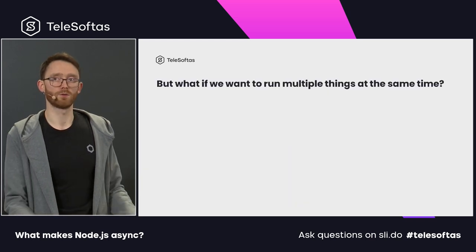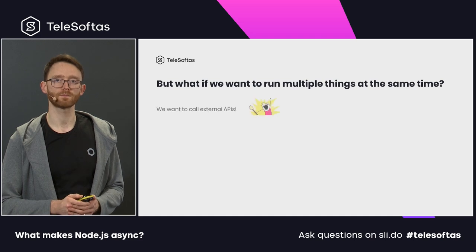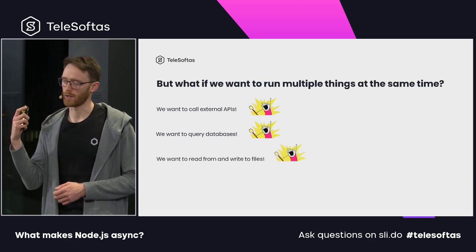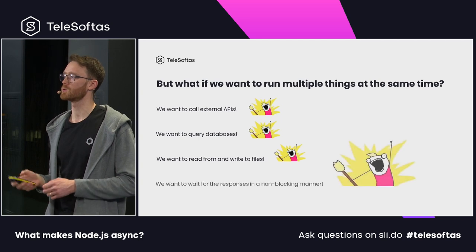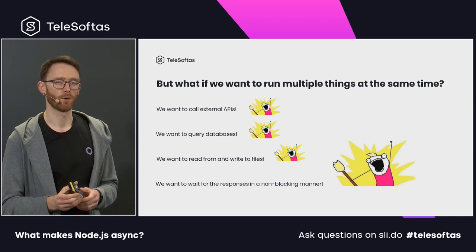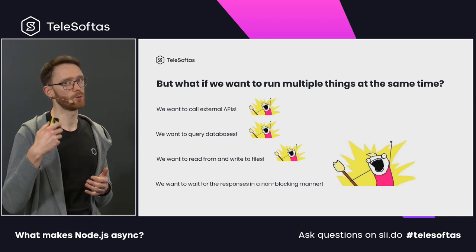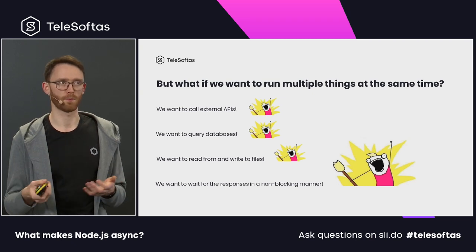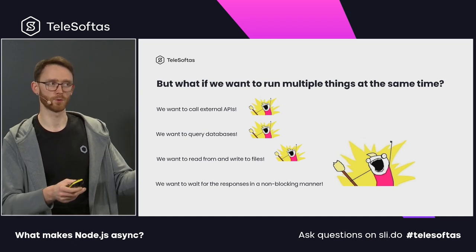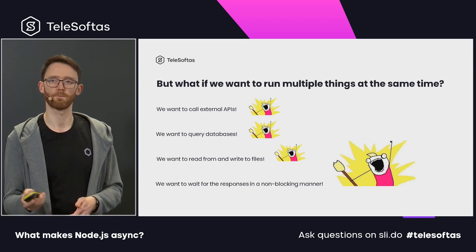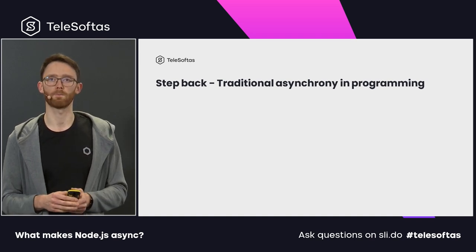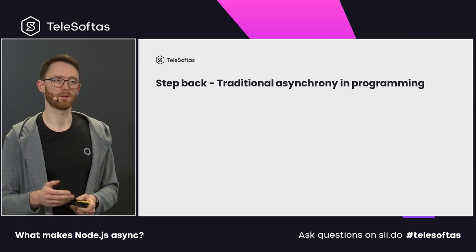But what if we want to run multiple things at the same time? We want to call external APIs, query databases, read and write files, and most importantly, wait for responses in a non-blocking manner. So if we query a database, we don't want to block our server — for example, a Node.js server — we want other users to be served without being blocked. Before diving into how we can do this in Node.js, let's remember what asynchrony actually is.